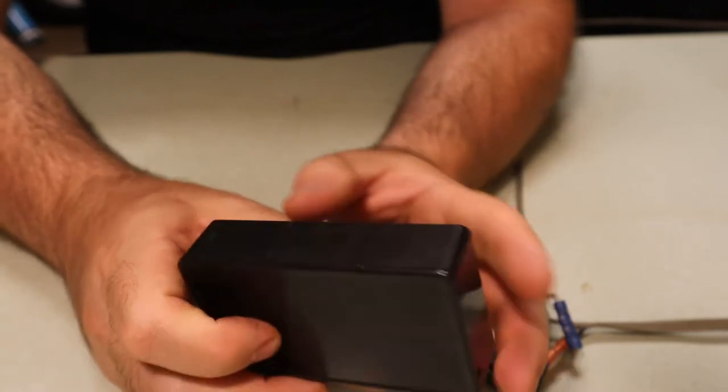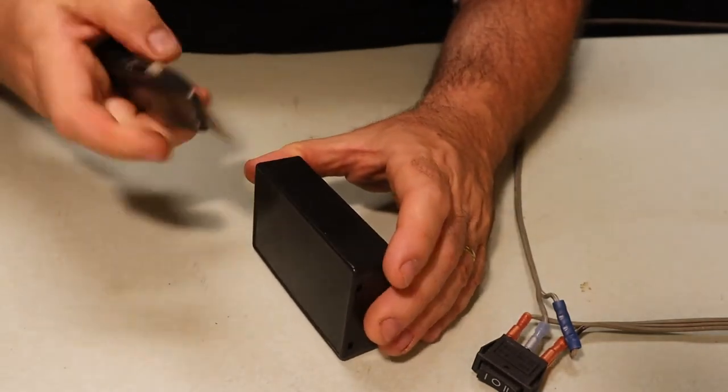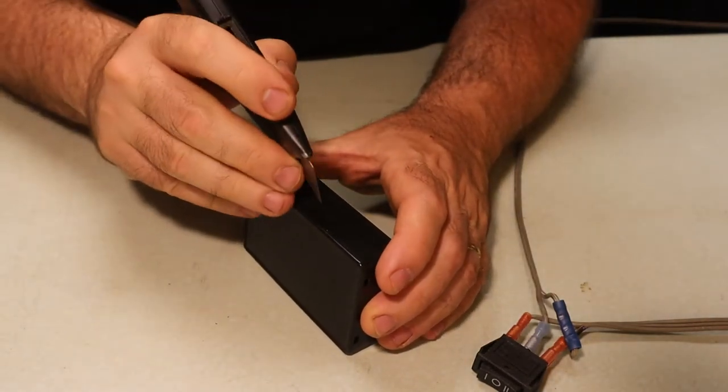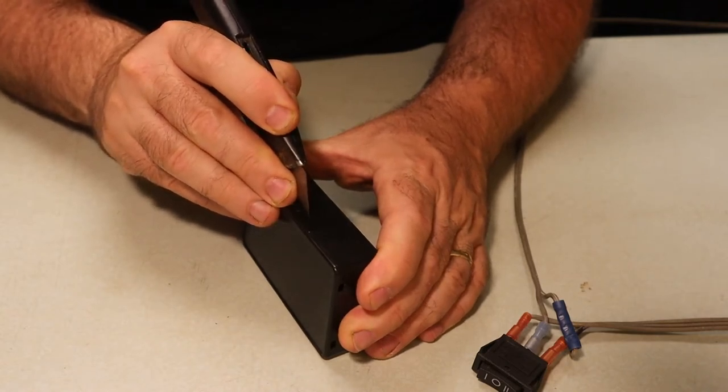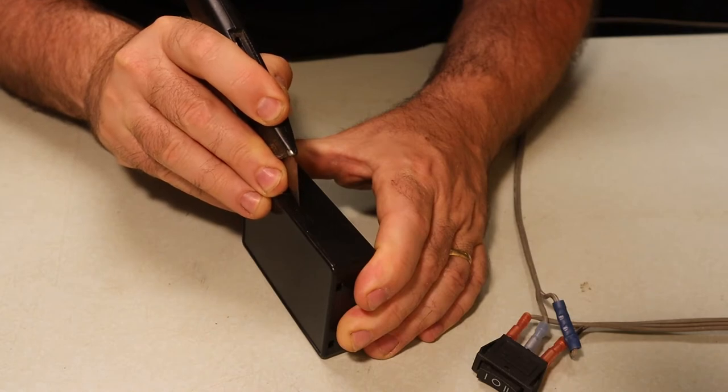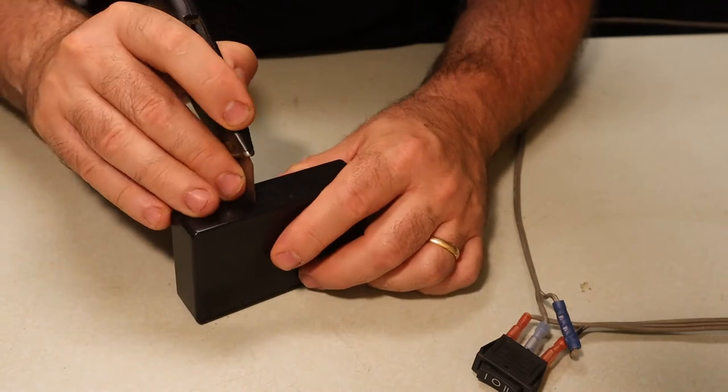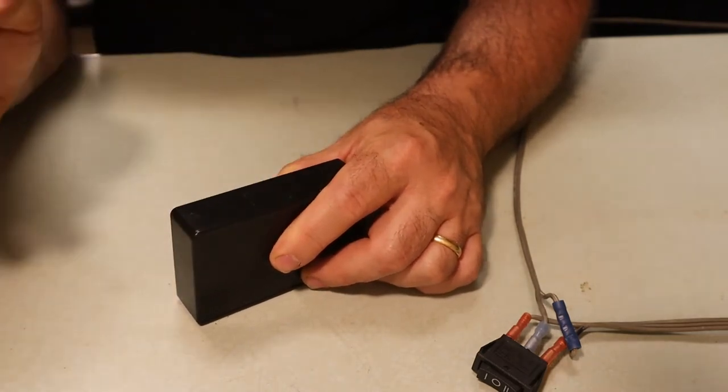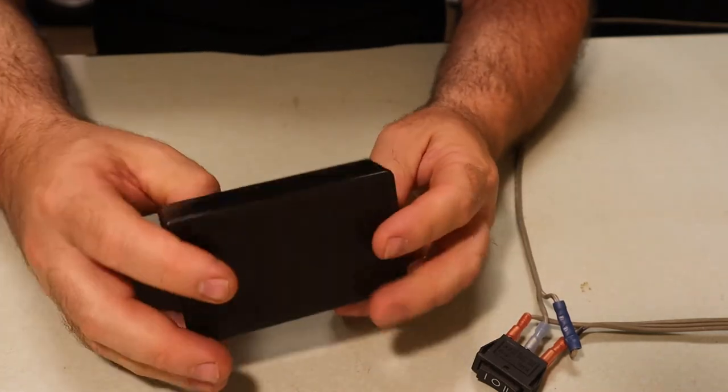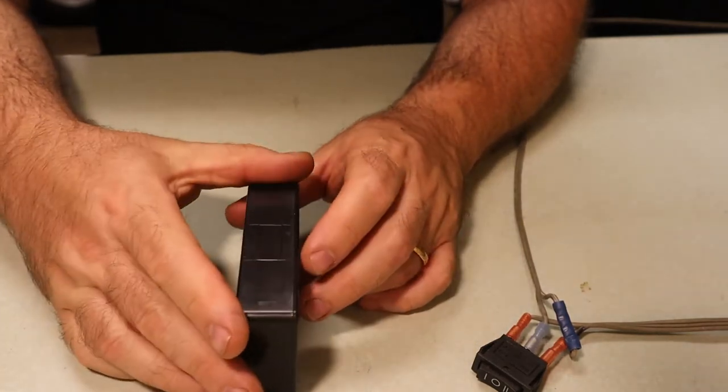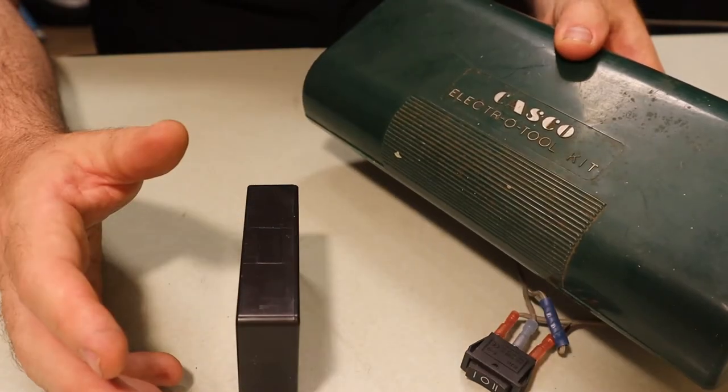I'm just going to use a utility knife to try and score it along the edge just a little bit, just so I don't accidentally erase the pencil line. Okay, so you can see I kind of scored that on there.